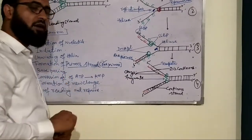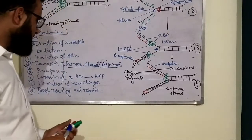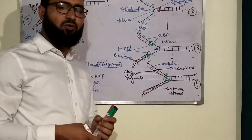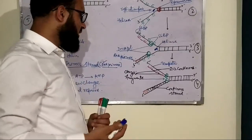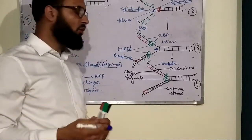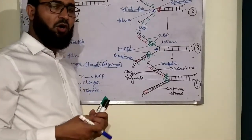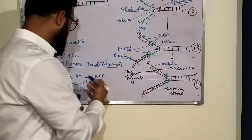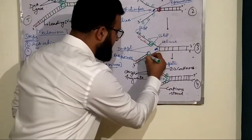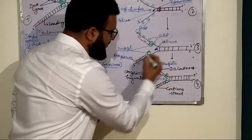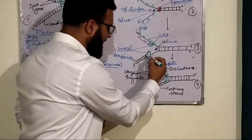The next step is base pairing. The nucleotides exist as triphosphates: adenine triphosphate, guanine triphosphate, cytosine triphosphate, and thymine triphosphate. After the monophosphate is added, two phosphates are released as pyrophosphate, and only one phosphate remains. The enzyme DNA polymerase carries out this reaction and synthesizes DNA in the 5' to 3' direction.